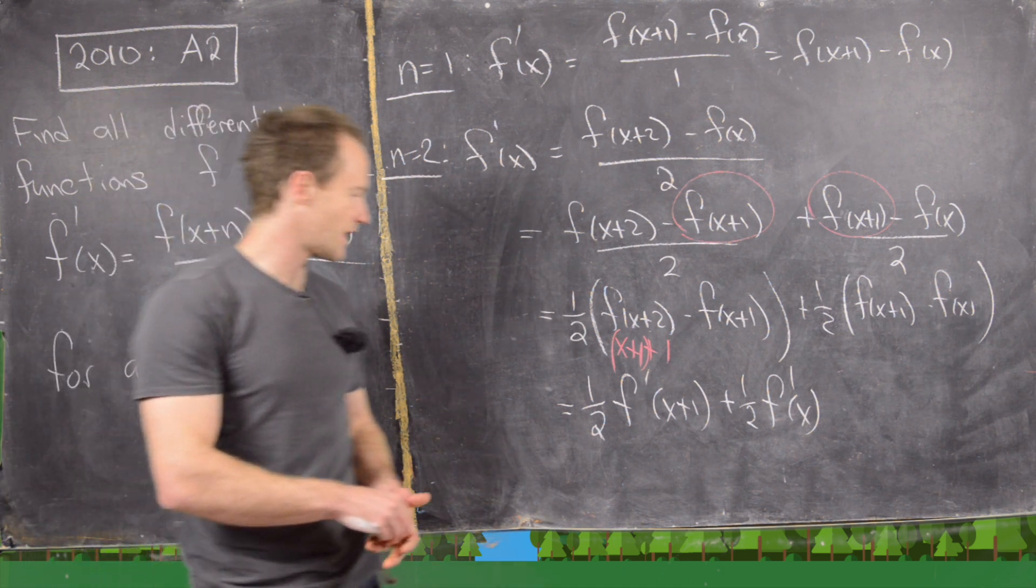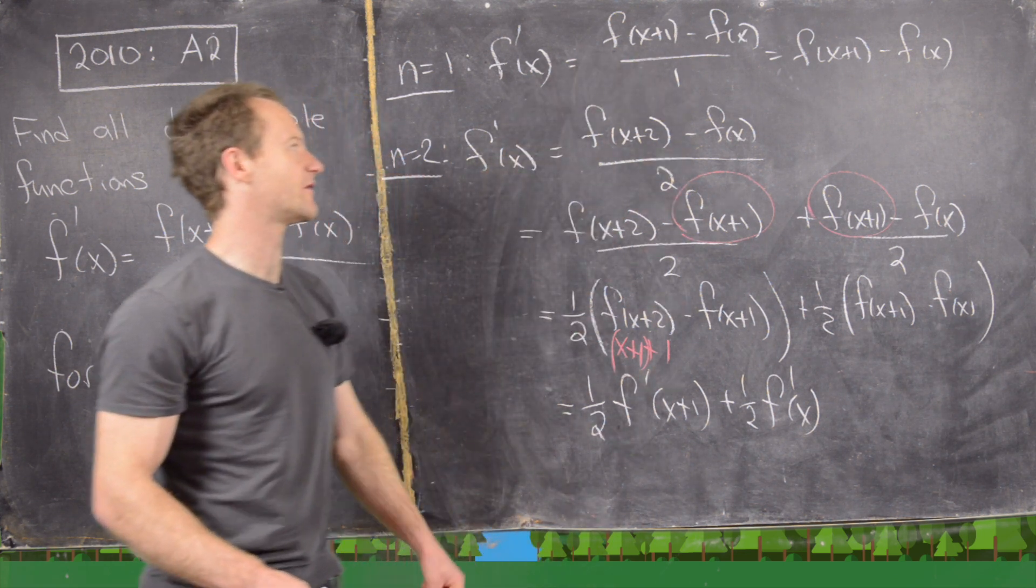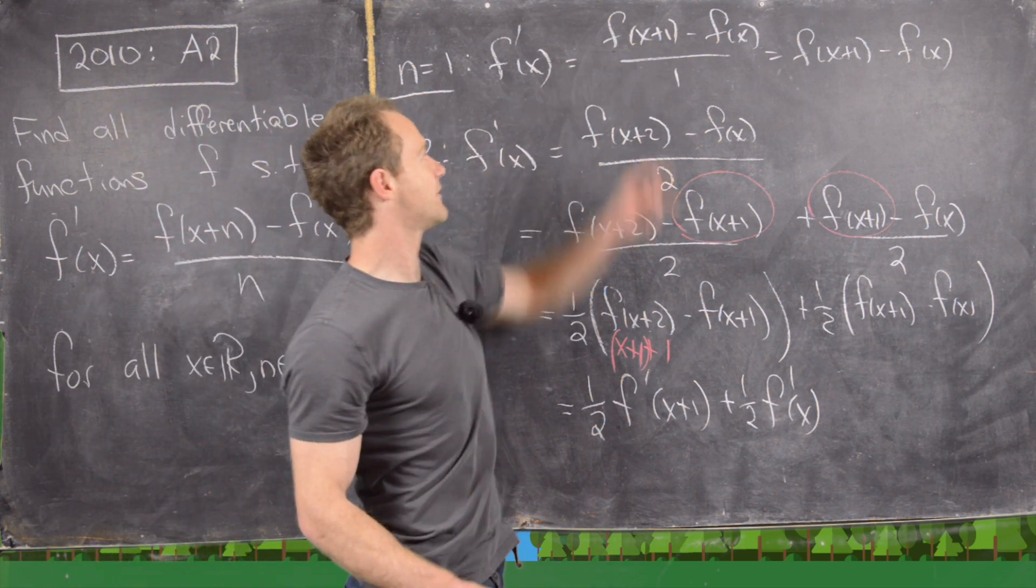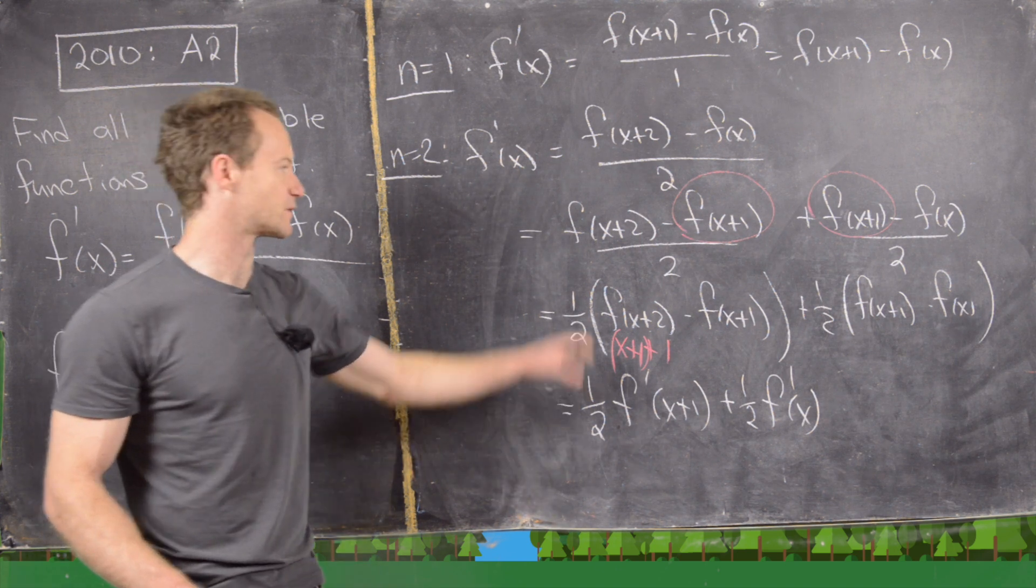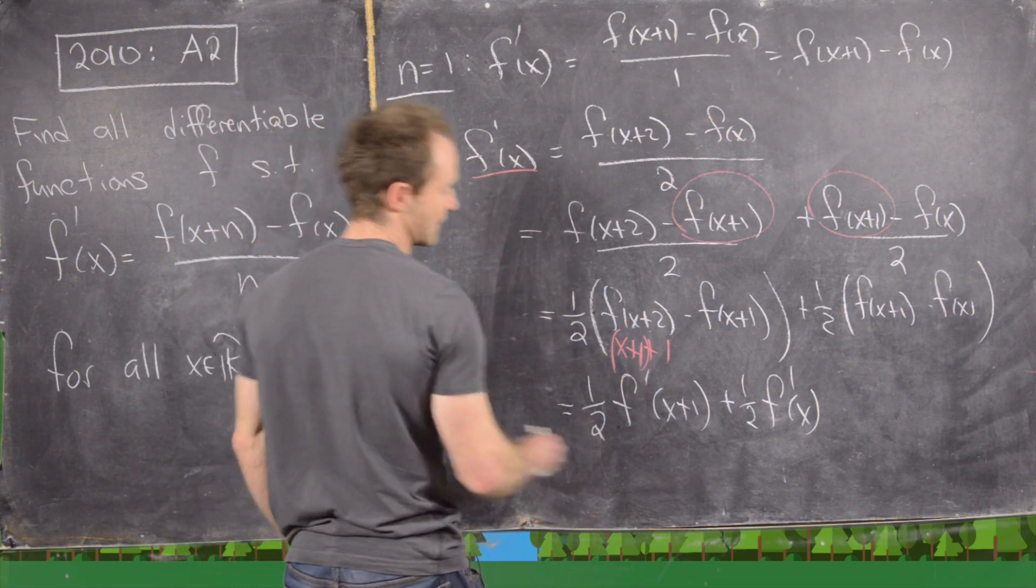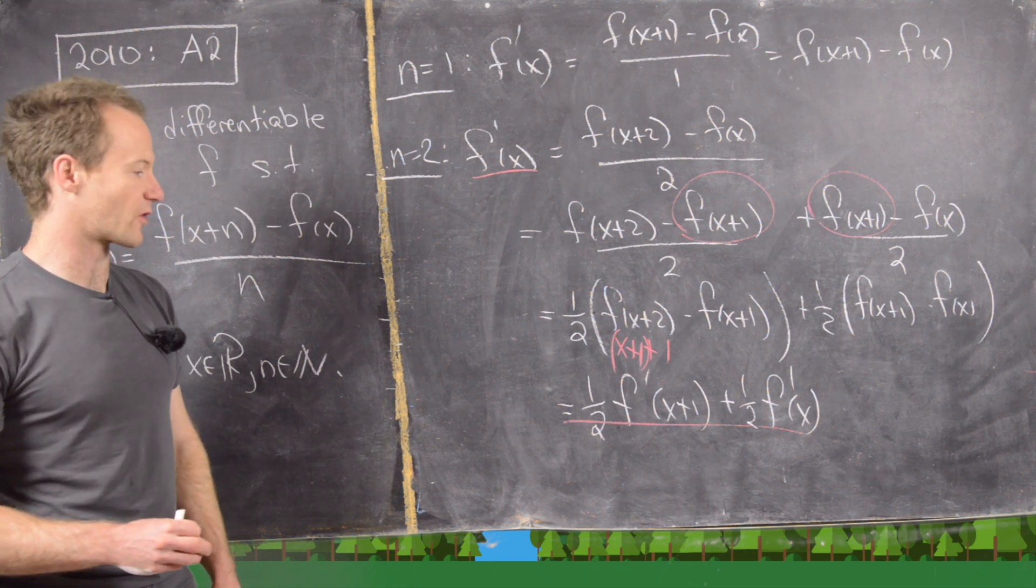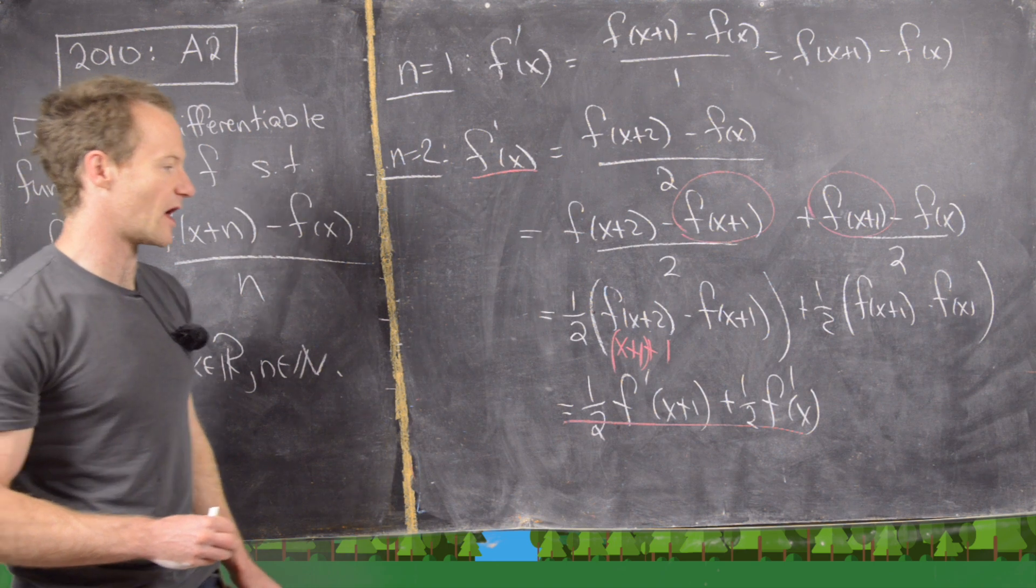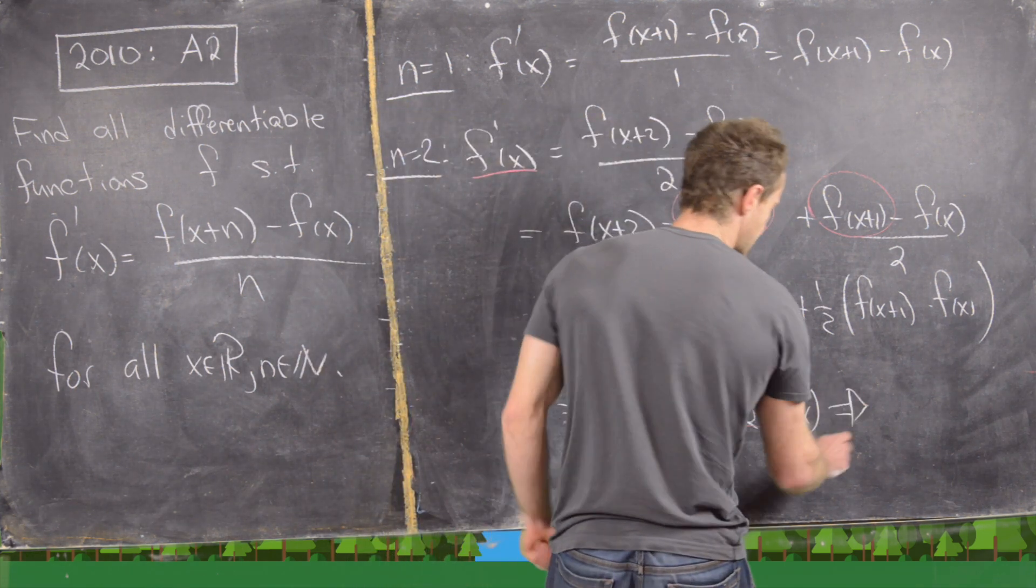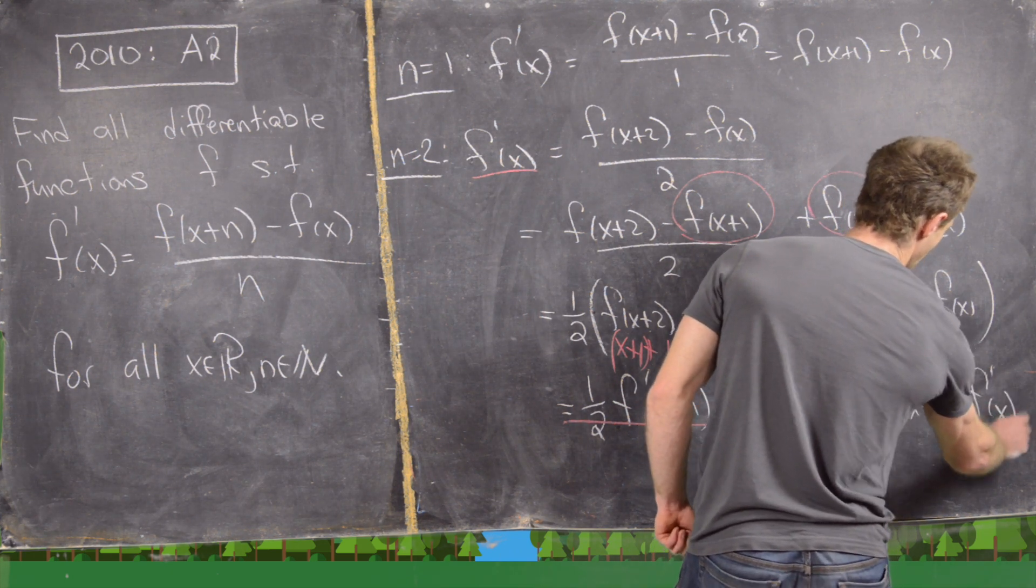So let's talk through that. We'll notice f'(x+1) is going to be equal to f(x+1) minus f(x) over 1 where we have replaced x with x+1. So in other words, it's f(x+2) minus f(x+1) over 1. So it's this thing right here. But now let's look at the extreme left and right hand side of this and notice that allows us to solve for f'(x+1) in terms of f'(x). So we can add subtract that from both sides and that's going to very quickly give us the following.